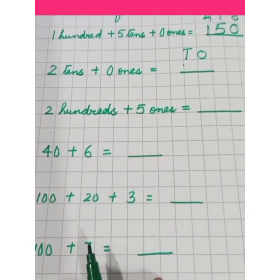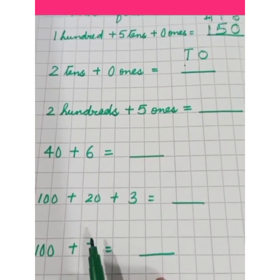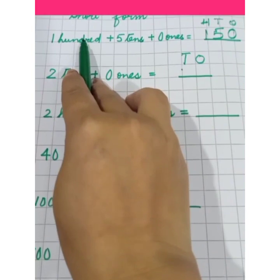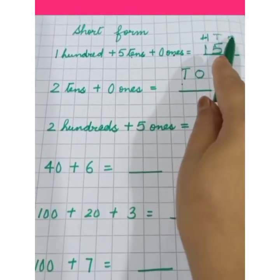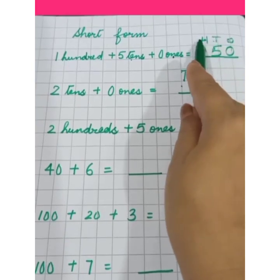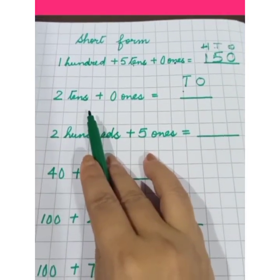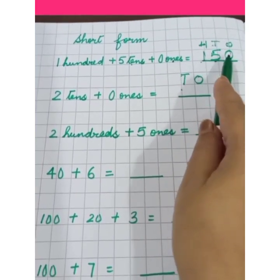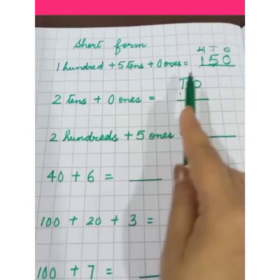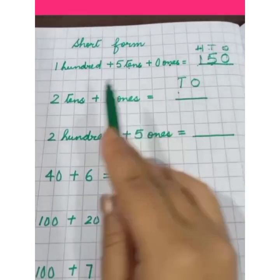Now let us learn how to write in short form. 1 hundred, 5 tens, 0 ones. So we will make columns of ones, tens and hundreds. 3 digit, 1 in the hundreds place, 5 in the tens place and 0 in the ones place. So the number is 150.